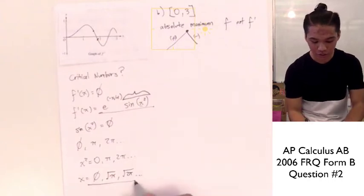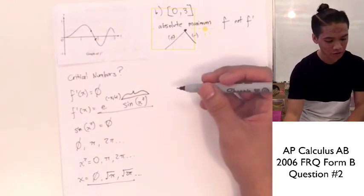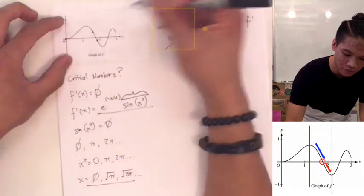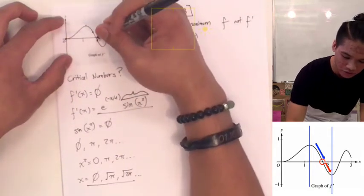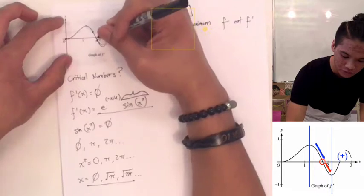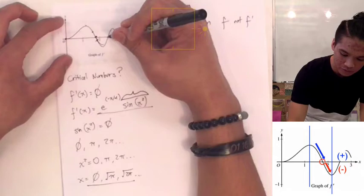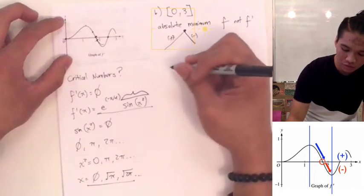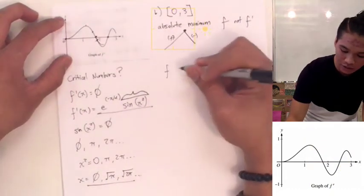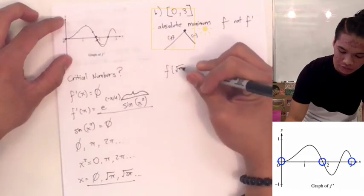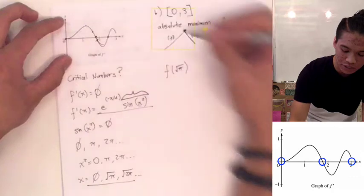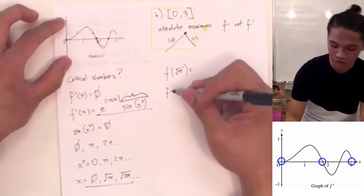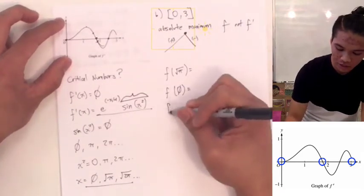We now know our bends in the graph. Using this, we can find that we have our endpoint, and then where it's going from positive to negative right here at √π, and then it's going negative to positive at √(2π). So we're only going to need to look at √π — that's when f prime goes from positive to negative. We also have to look at our endpoints: our interval is from 0 to 3, so we're going to evaluate f(0) and f(3).